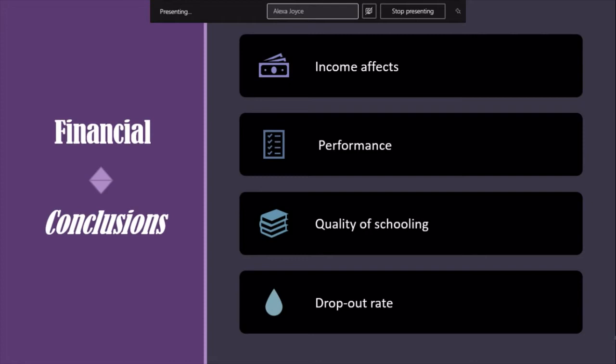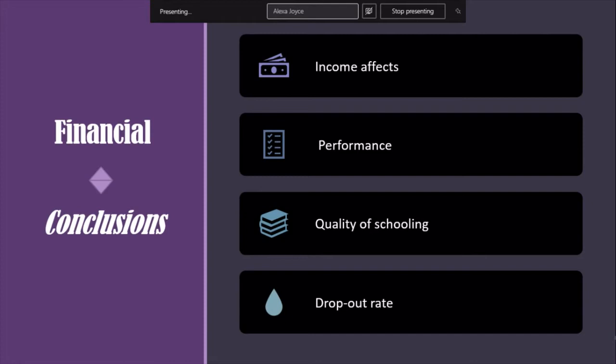The numbers show that, as Mr. Patrinos already mentioned, according to the report from August 2020, models project a future earnings gap of $11,000 at the individual level, or $10 trillion for the whole global cohort. In high-income countries, the projected individual earnings gap is about $21,000, or between $3.4 trillion for the whole cohort. So we see a large decline in income for many people.